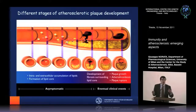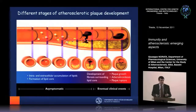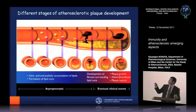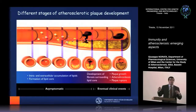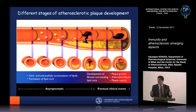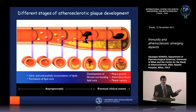If you have a plaque rupture, you expose the material within the atherosclerotic plaque to the bloodstream, and this immediately activates the thrombogenic response. You have generation of a thrombus that can either further reduce the lumen or completely occlude the vessel. These are the clinical events of atherosclerotic disorders — known as angina, myocardial infarction, or stroke.